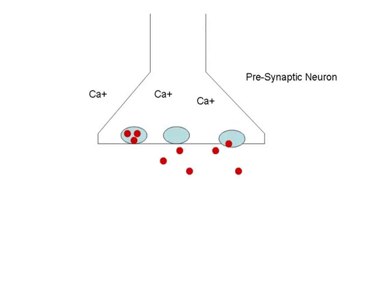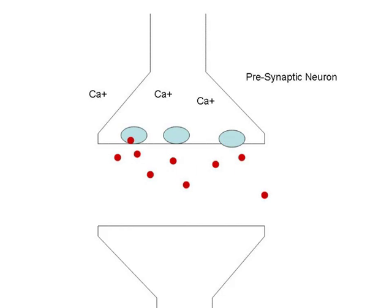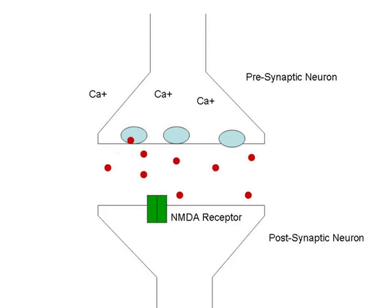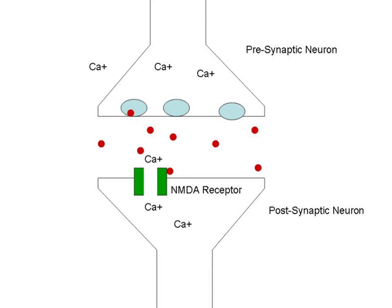The presence of calcium triggers the release of glutamate into the synaptic cleft. Glutamate stimulates calcium-permeable NMDA receptors on the postsynaptic neuron, which open to allow calcium into the cell.